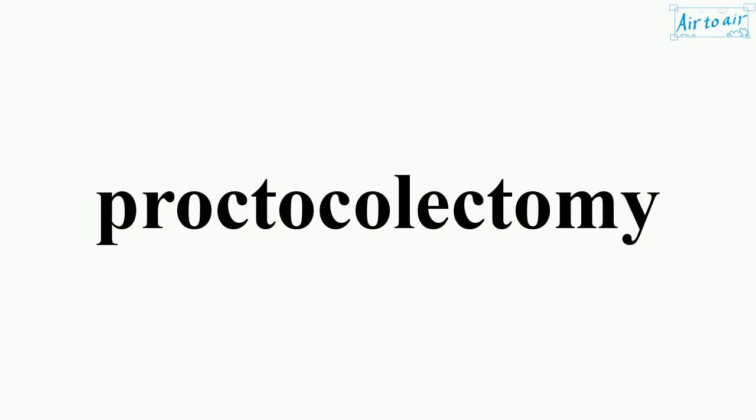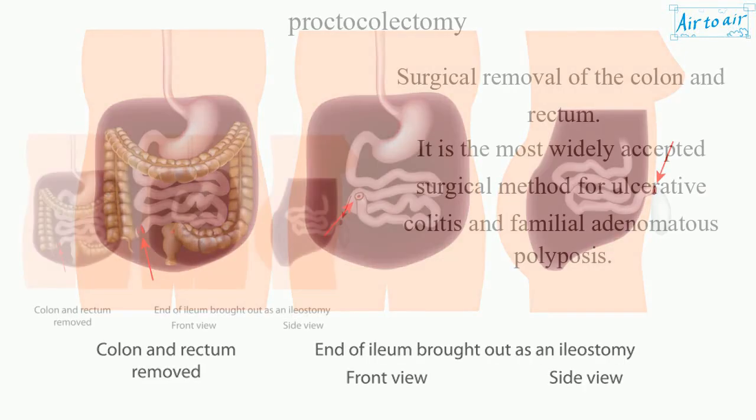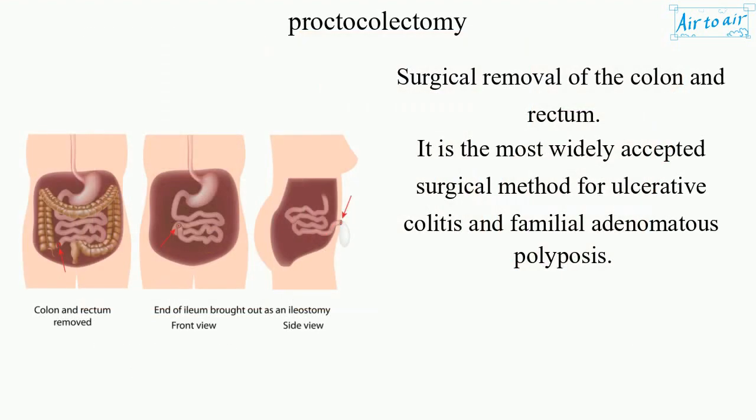Proctocolectomy: surgical removal of the colon and rectum. It is the most widely accepted surgical method for ulcerative colitis and familial adenomatous polyposis.